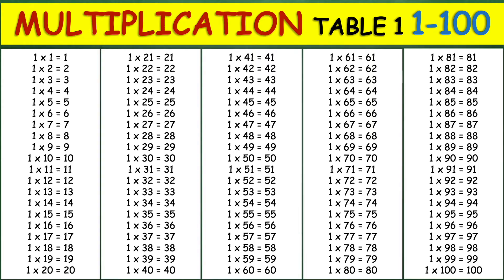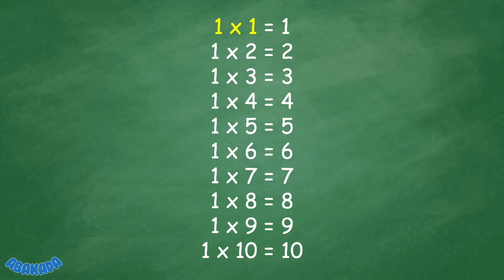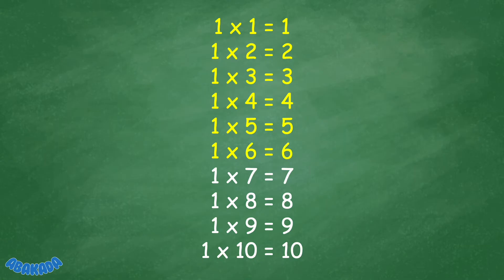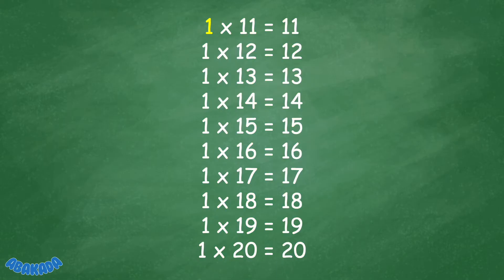Multiplication Table 1 from 1 to 100. 1 times 1 equals 1. 1 times 2 equals 2. 1 times 3 equals 3. 1 times 4 equals 4. 1 times 5 equals 5. 1 times 6 equals 6. 1 times 7 equals 7. 1 times 8 equals 8. 1 times 9 equals 9. 1 times 10 equals 10. 1 times 11 equals 11. 1 times 12 equals 12. 1 times 13 equals 13. 1 times 14 equals 14. 1 times 15 equals 15.